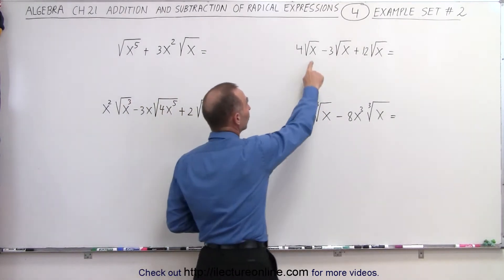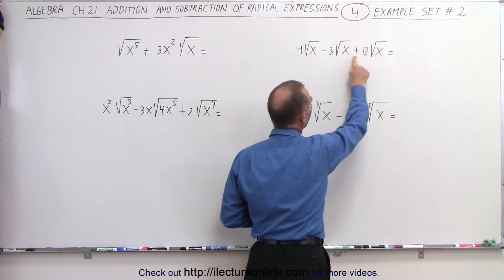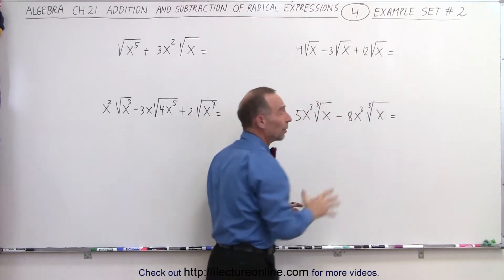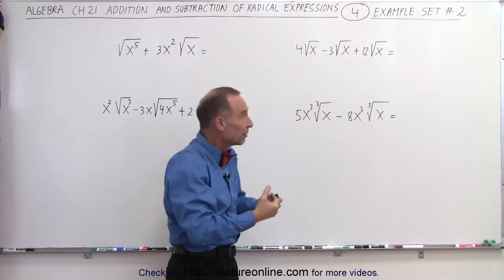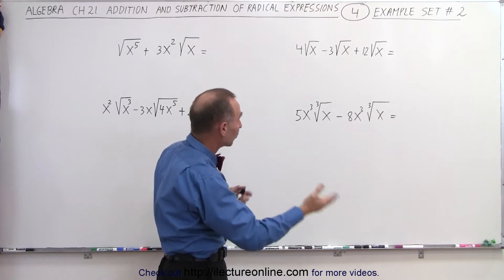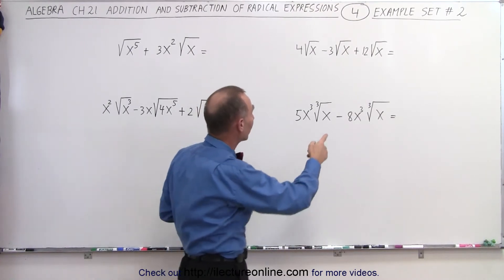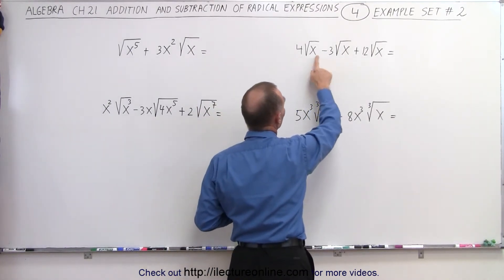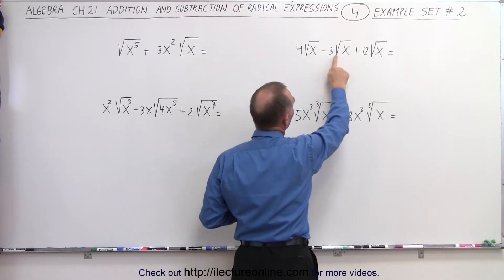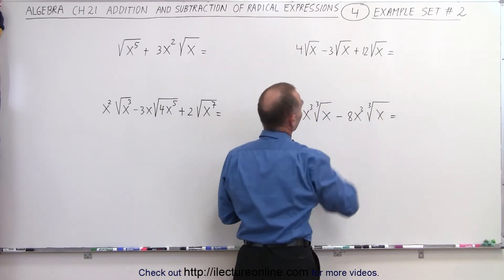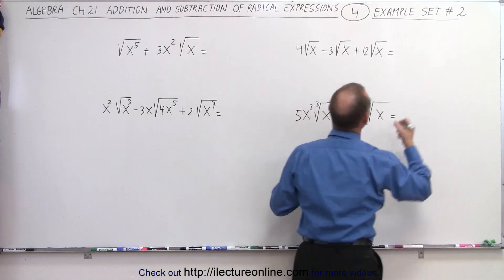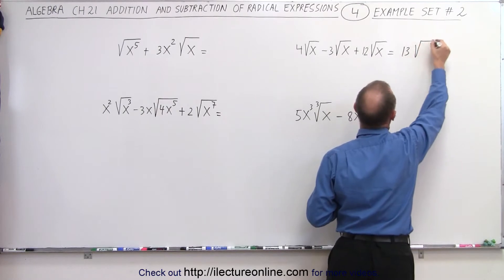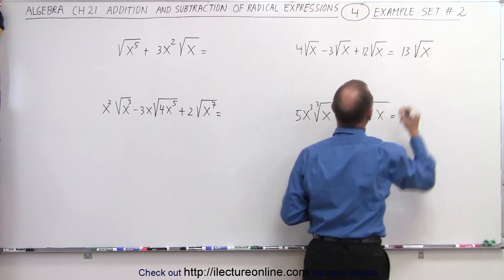You have the square root of x, so you can see that we can simply either factor out the square root of x, or simply add the numerical coefficients: 4 minus 3 is 1, plus 12 is 13, so we can say that this is equal to 13 times the square root of x.